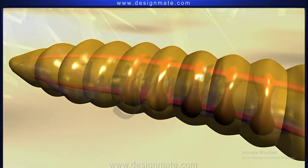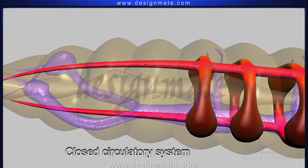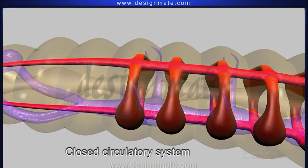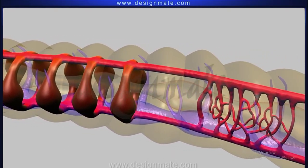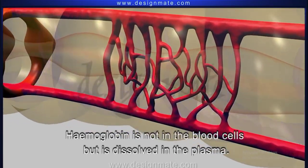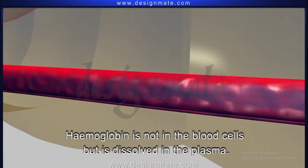A well developed closed circulatory system in these animals is seen for the first time. Hemoglobin is not in the blood cells but is dissolved in the plasma.